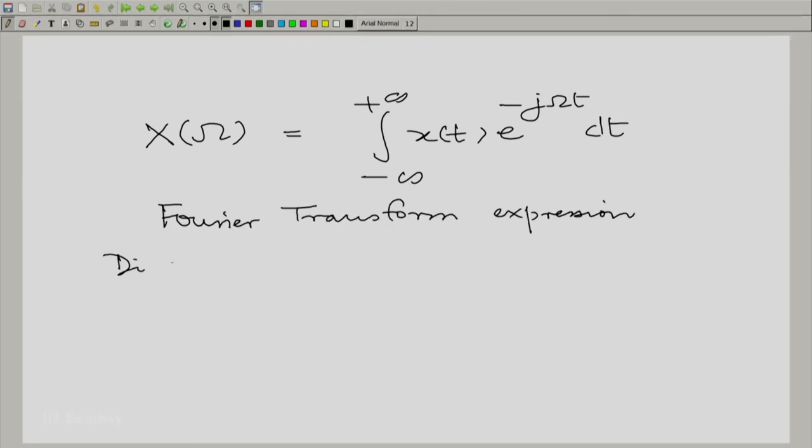So, we write down capital X(Ω) is equal to integral from minus to plus infinity X(t) e^(-jΩt) dt. This is the Fourier transform expression. And we differentiate both sides with respect to t, with respect to omega rather, to the variable.